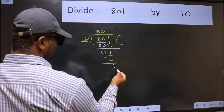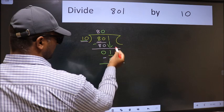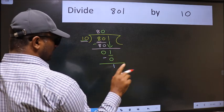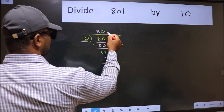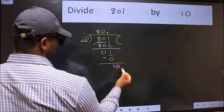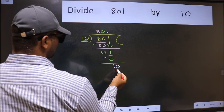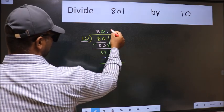Over here, we did not bring any number down, and 1 is smaller than 10. So now we can put dot and take 0. So 10 - when do we get 10 in 10 table? 10 once is 10.